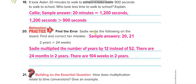A student wrote on the board: 2 years equals 24 weeks. Find and correct her mistake. Two years does not equal 24 weeks — two years equals 24 months is also wrong. One year is 52 weeks, so two years equals 104 weeks. That is her mistake.